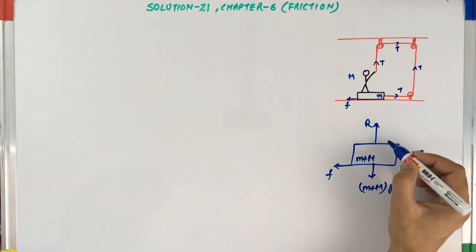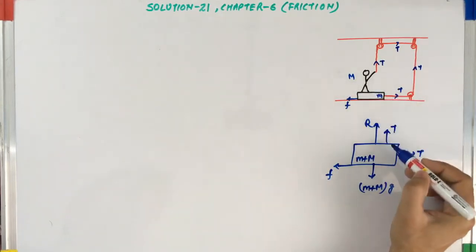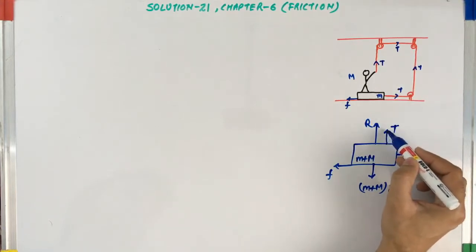There is an additional force in the upward direction, that is T, which is applied by the man on the string. So this T is acting in the upward direction.